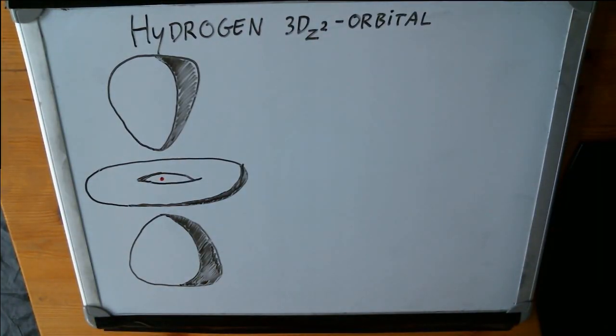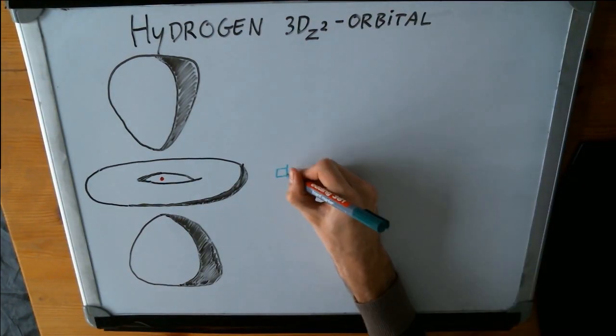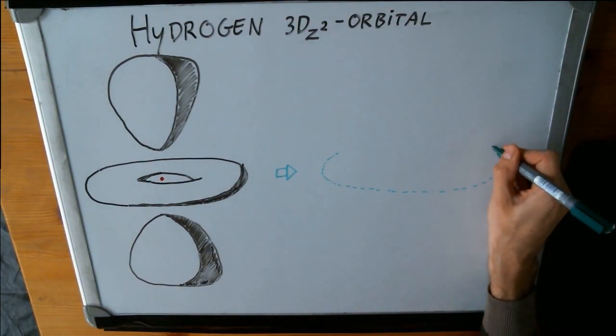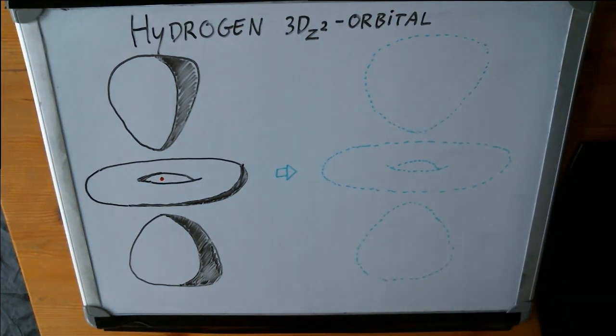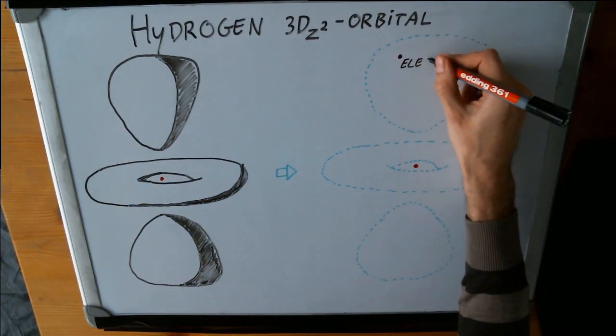And if you then take a measurement of the electron to find out where it actually is, what happens is this wave function suddenly collapses. It condenses into a single point, which we call the electron.